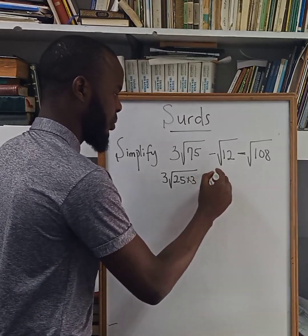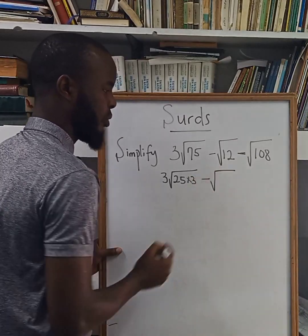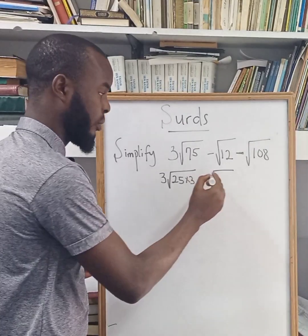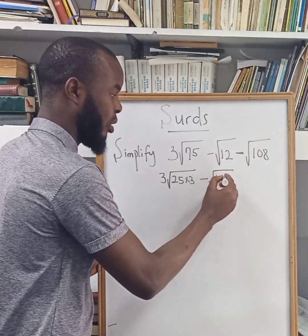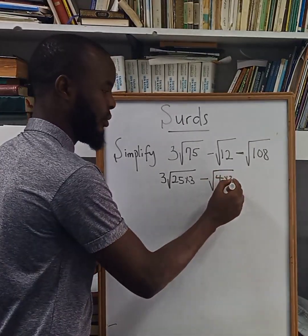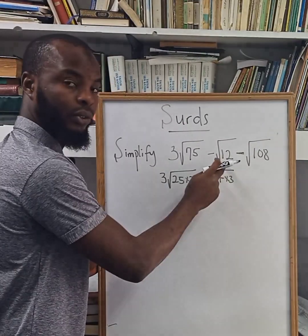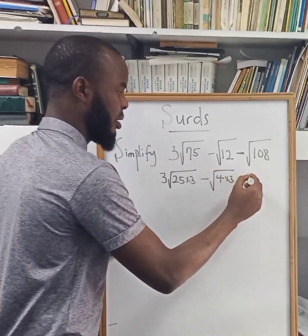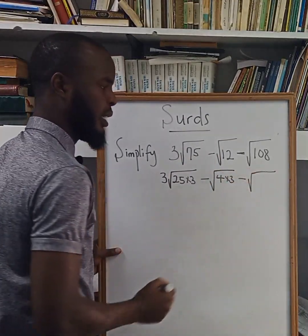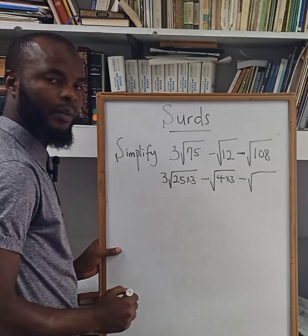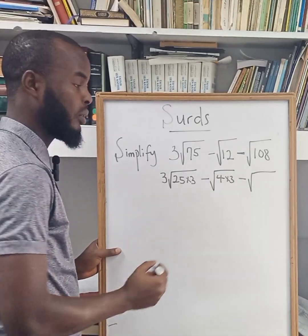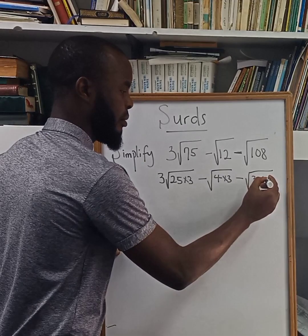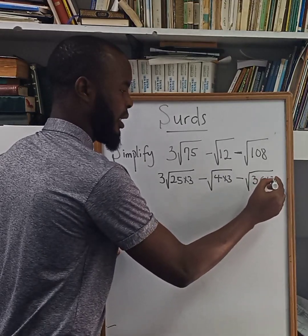The same thing will be done to the other terms. Here we have root 12 — the highest perfect square that can go into 12 is 4, which gives us 4 times 3 equals 12. And then minus root 108 — the highest perfect square that can go into 108 is 36 multiplied by 3.